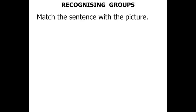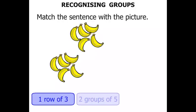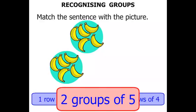Now in this one we need to match the sentence with the picture. We've got a picture of bananas. Is it one row of three, two groups of five, or three rows of four? Well, certainly we've got one, two — we've got two groups. How many in each group? One, two, three, four, five. We've got two groups of five.